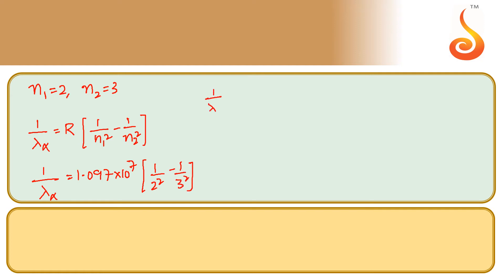This gives us 1 by lambda alpha is equal to 1.097 into 10 power 7 into 1 by 4 minus 1 by 9.